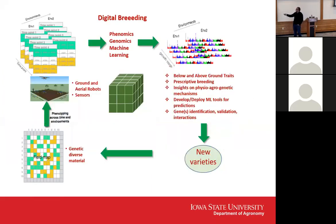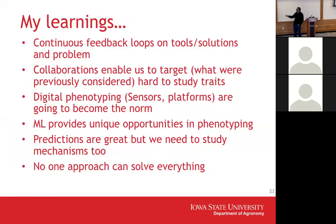I'll skip this — it's just the loop of how the breeding program is set up with phenotyping and all these different aspects of digital breeding and the questions we are pursuing leading to a new variety. This year, we finally have some new varieties and then we keep following the loop.